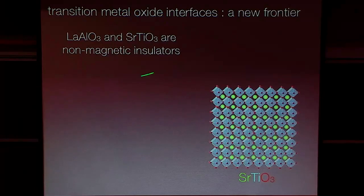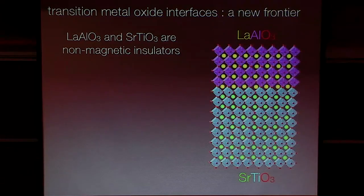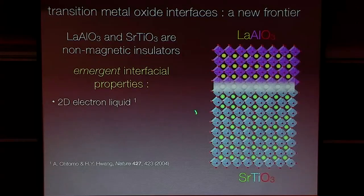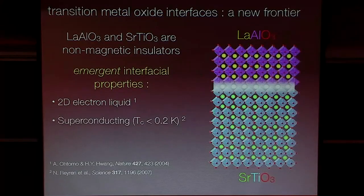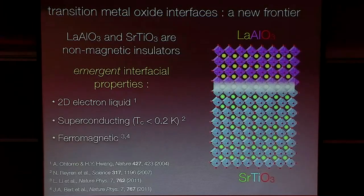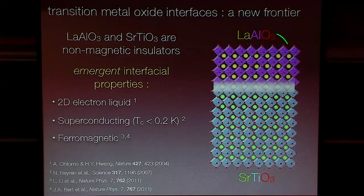This is a pretty famous example — probably the best known one in the field of oxide interfaces: the interface between strontium titanate and lanthanum aluminate. If you deposit a few unit cells of lanthanum aluminate on top, what Hwang and Ohtomo first found was that the interface has a 2D electron liquid, even though both constituents are non-magnetic insulators. They later found it was superconducting. And even more interesting was that people later found it was actually ferromagnetic — which is really surprising, because you can torture STO and LAO all you want and it's very hard to make them magnetic. There's something new and emergent at this interface that wasn't there in the bulk compounds.